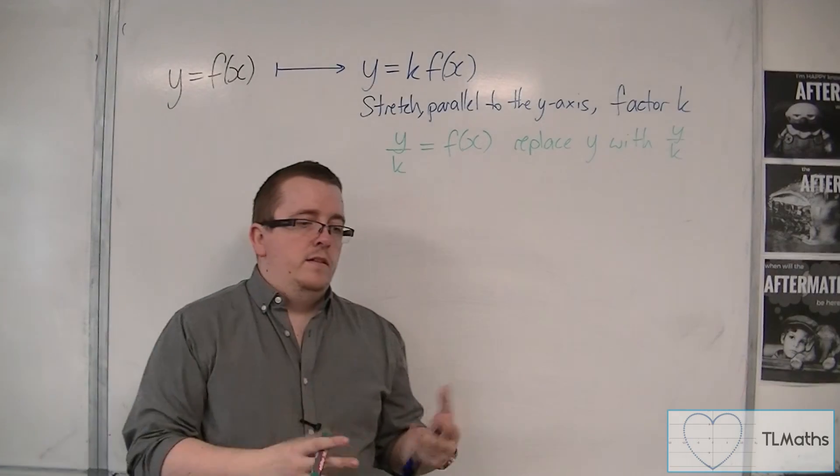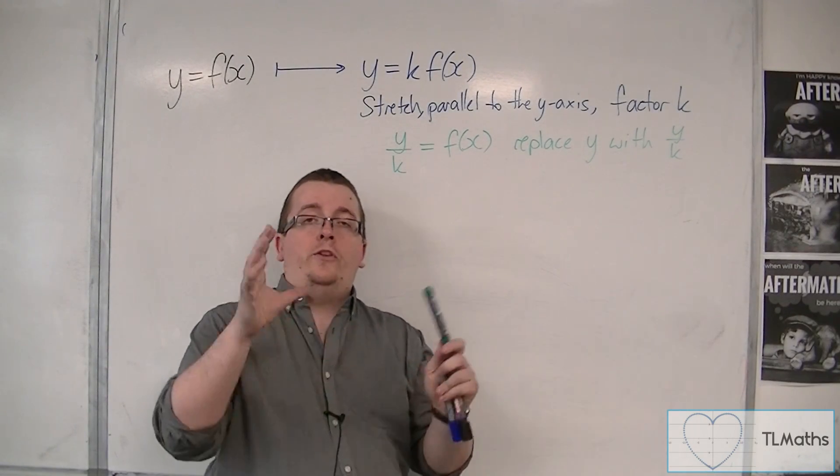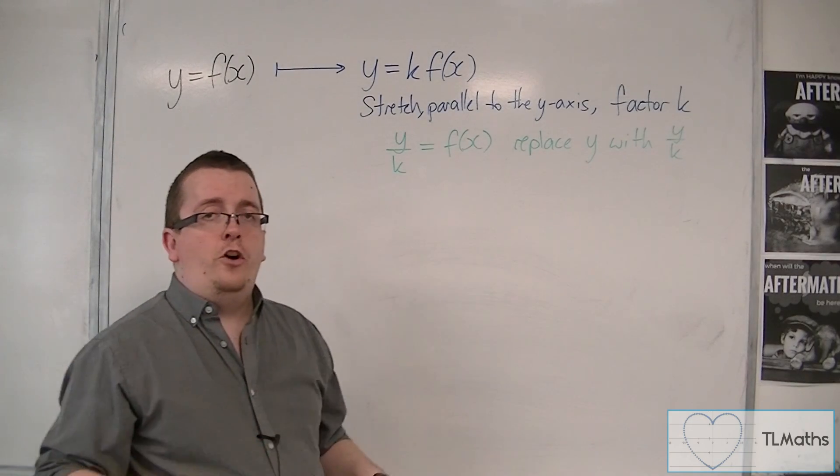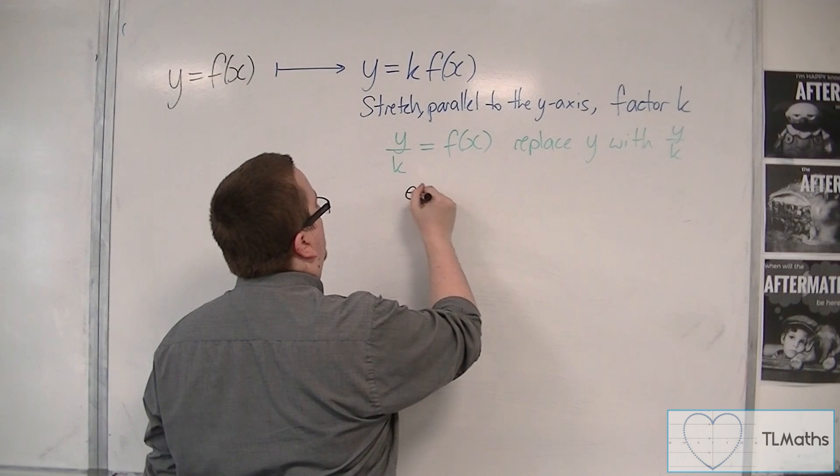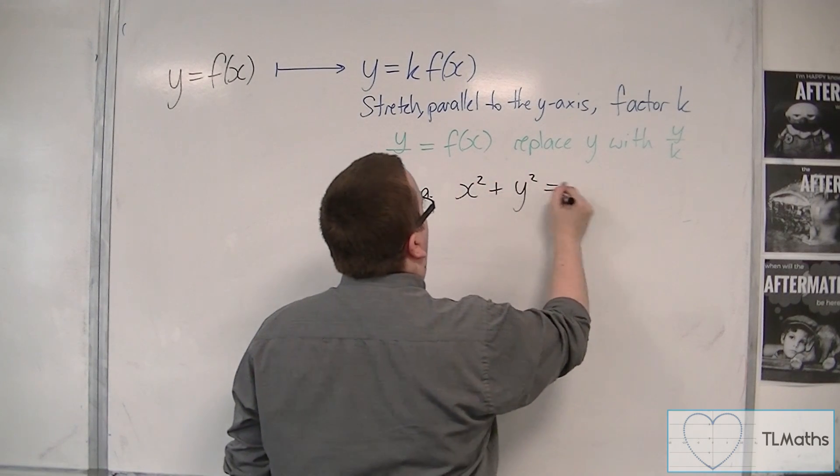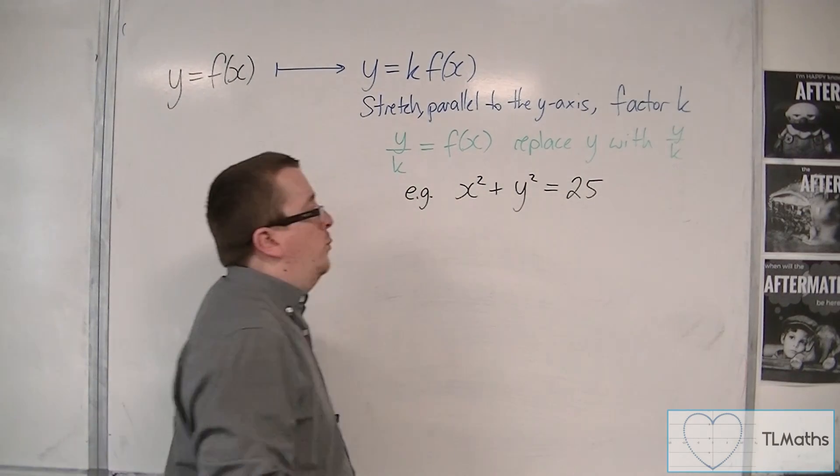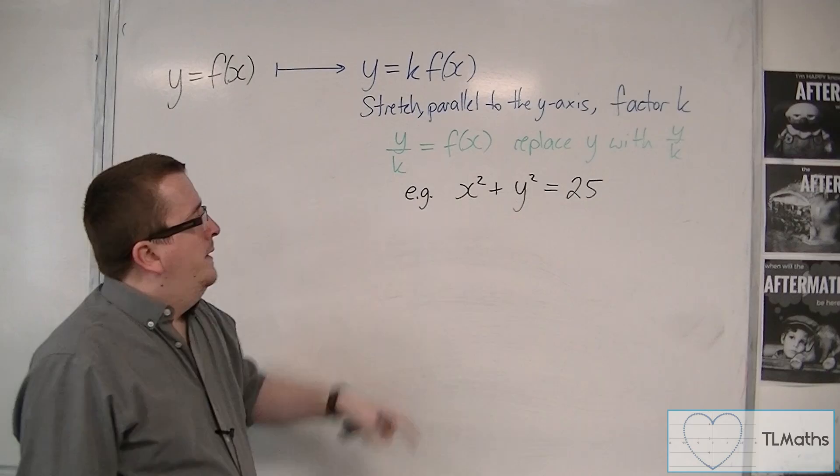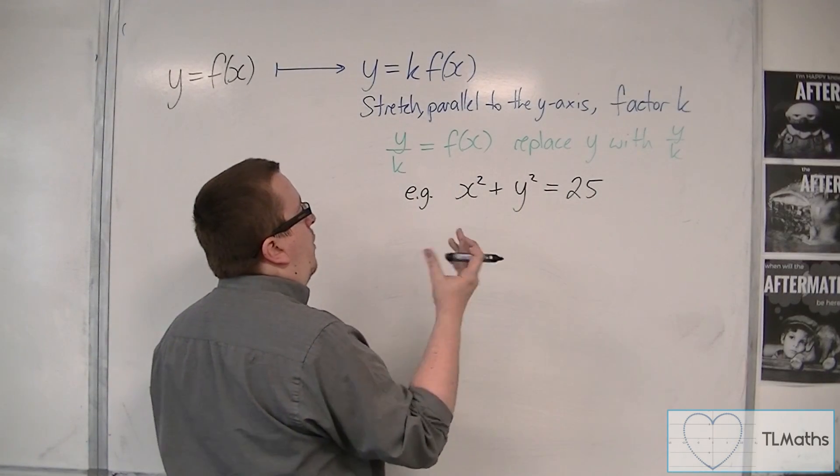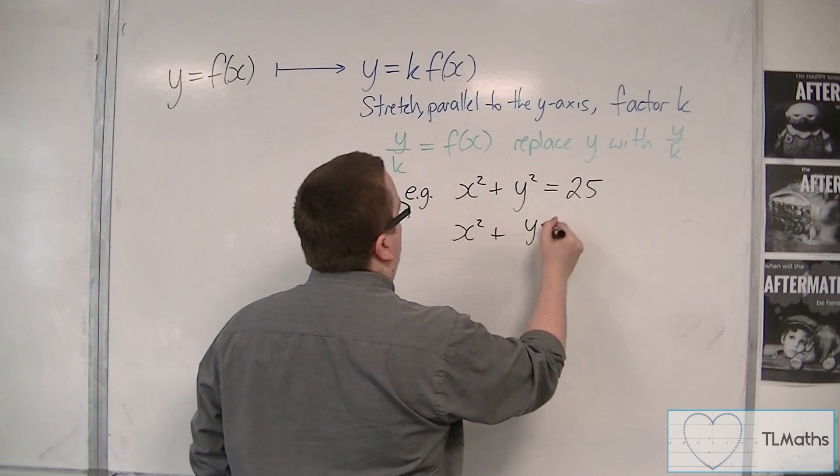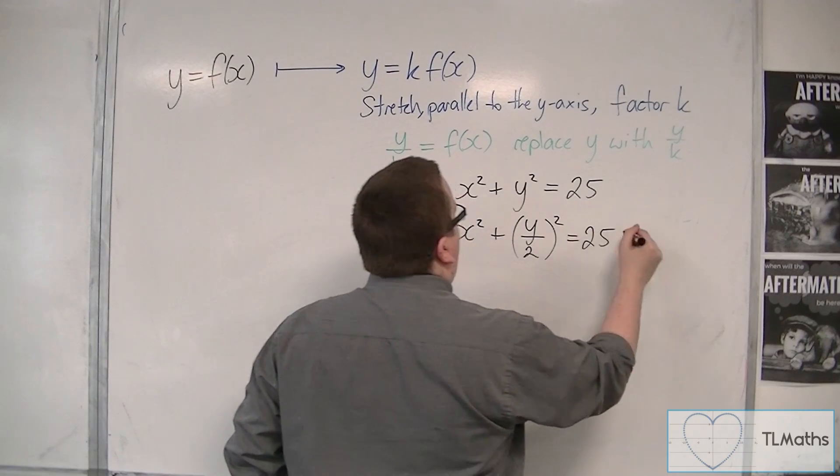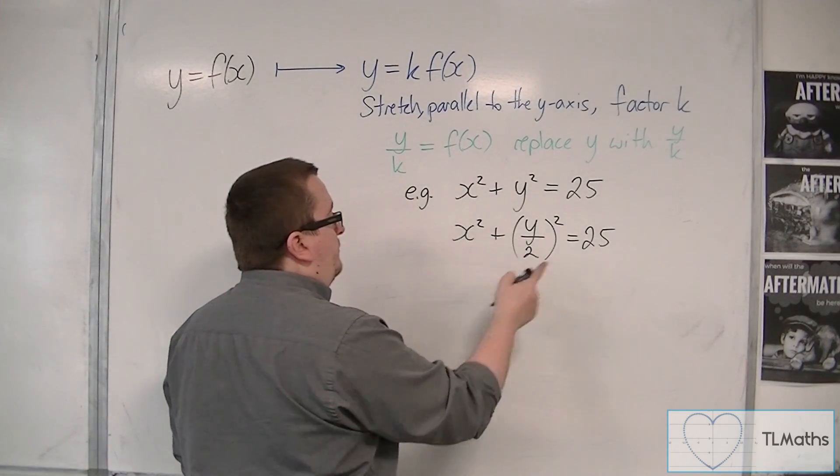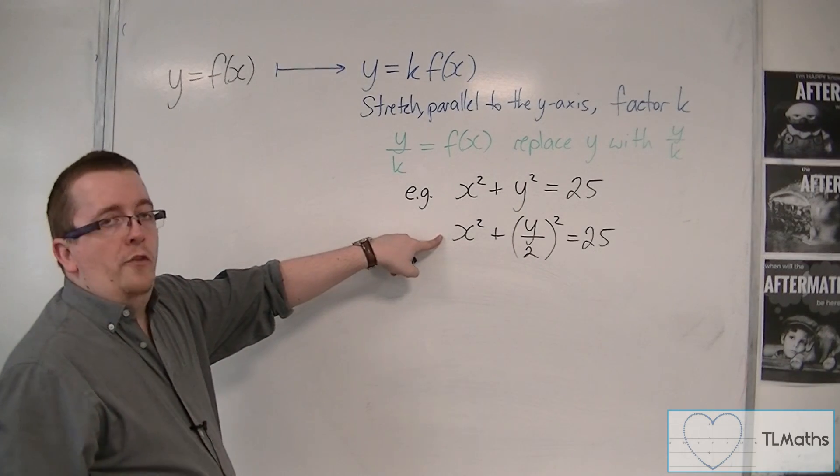So you could then use this process to transform any curve you like. So if we had the equation of a circle, for example, if we had x squared plus y squared is equal to 25, this was the equation of a circle centred at the origin with radius 5 that we looked at in core 1. So if I replace y with y over 2, for example, this is a stretch parallel to the y-axis by factor 2. And so this is now the equation of an ellipse.